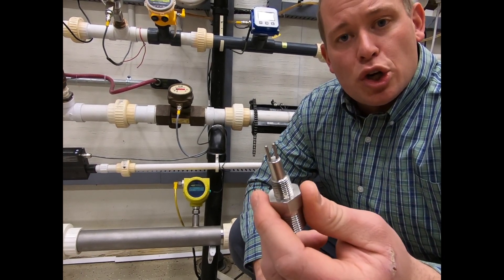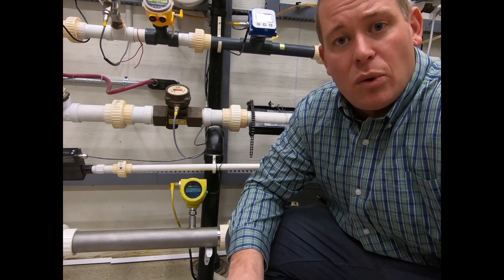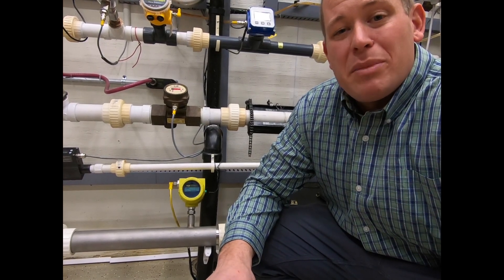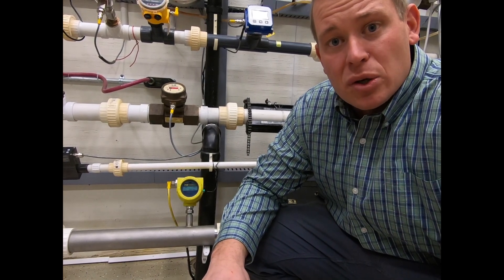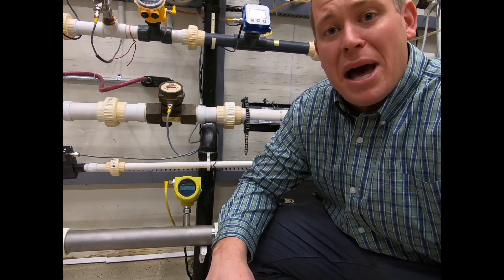So it's got a very large turndown ratio of about 100 to 1 or better, and also it measures directly mass flow rate, so there is no pressure temperature compensation. The meter does that all internally, so that it's actually outputting mass flow rate.